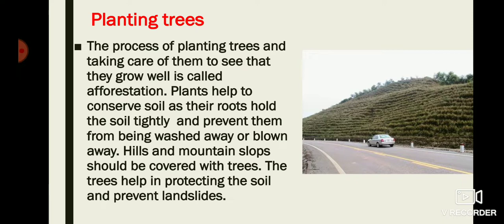Hills and mountain slopes should be covered with trees. The trees help in protecting the soil and prevent landslides. Planting trees on a large scale is called afforestation. Their roots hold the soil tightly, which prevents the soil from being washed away by rain and blown away by wind. If slopes of hills and mountains are covered with trees, it prevents soil erosion and also prevents landslides.